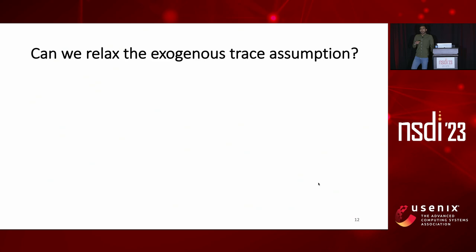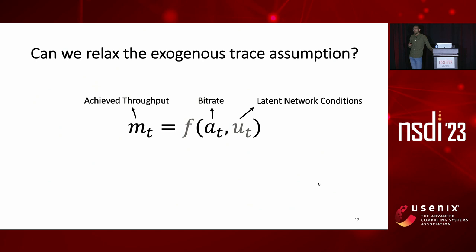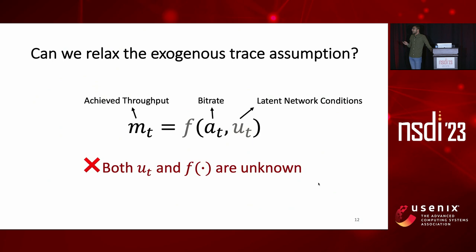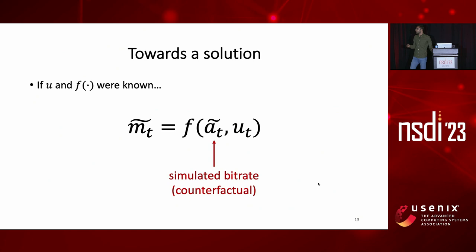By now you know about exogenous trace assumption as a key source of bias in trace-driven simulation. The natural thing to do next is to see if we can remove this source of bias for doing unbiased simulation. To do that, we have to explicitly model the fact that achieved throughput at time step t, m(t), is a function of both the chosen bitrate and also latent network conditions u. This can be things like the bottleneck link bandwidth or the number of flows you're competing with. The challenge with this model is that both u and f are unknown. If we knew f and u, we could plug in the bitrate chosen by the new algorithm we're simulating and see how it would have affected the achieved throughput, m̃(t). But we still have to learn f and estimate u.